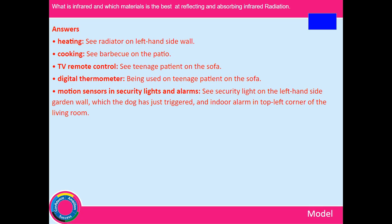Motion sensors: security lights and alarms use infrared. The small white boxes you see in the corners of rooms are infrared motion sensors that turn lights on, set off alarms, or notify when someone is walking past. These are called PIR sensors — passive infrared detectors. They sense heat from people or animals, which is why security lights turn on when a cat walks by.